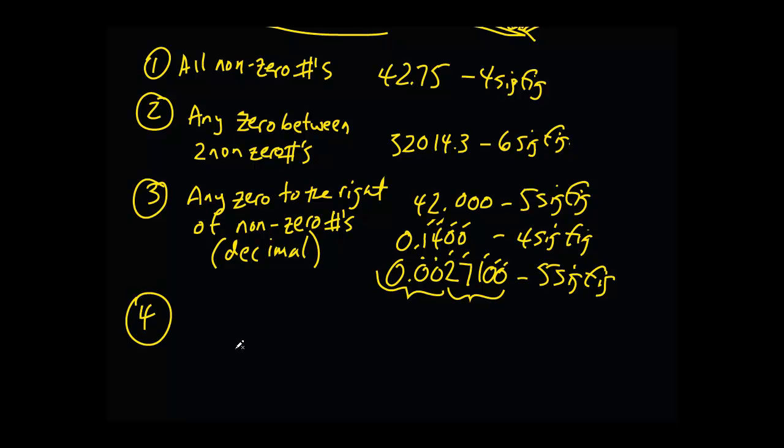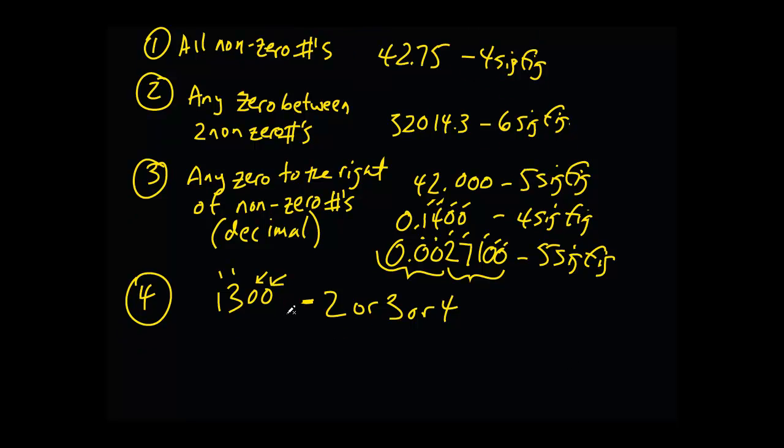Now here comes a couple tricky situations because if we had a number like 1300, since there's no decimal there, we don't know if these zeros are significant or not. This is a common mistake a lot of people make. So this could be two significant figures, or three or four. We don't know how many significant figures there are here because one or more of these zeros could be significant. However, as soon as we put a decimal there, it implies that some type of definitive calculation was conducted and now we have four significant figures. So this decimal makes really all the difference.